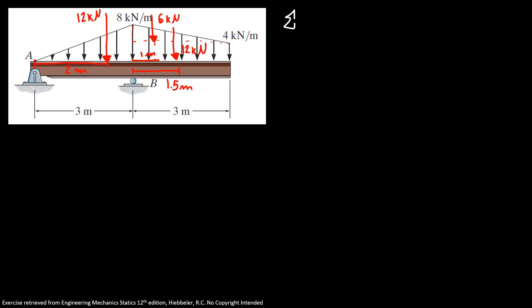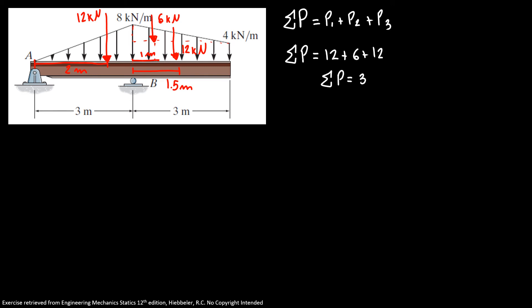So now we can find the resultant load. The sum of the forces is equal to P₁ plus P₂ plus P₃, which is 12 plus 6 plus 12. So the total resultant force is equal to 30 kN.